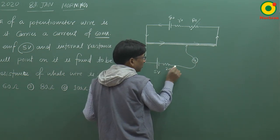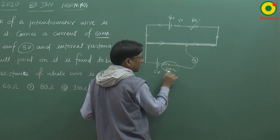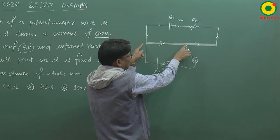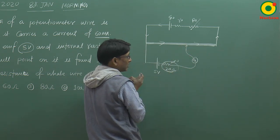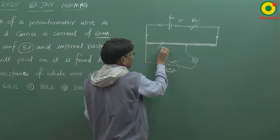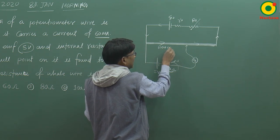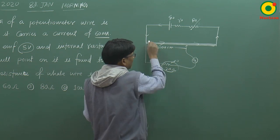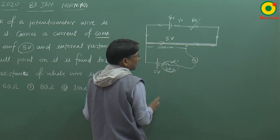तो इसका मतलब, जब इसमें current नहीं flow करेगा, तो यहां का potential difference आएगा 0। तो जो भी यहां का potential difference है, वो 5 volt के बराबर होना चाहिए। यहां पर 1000 centimeter balance length था, तो यहां का potential difference 5 volt के equal होना चाहिए।